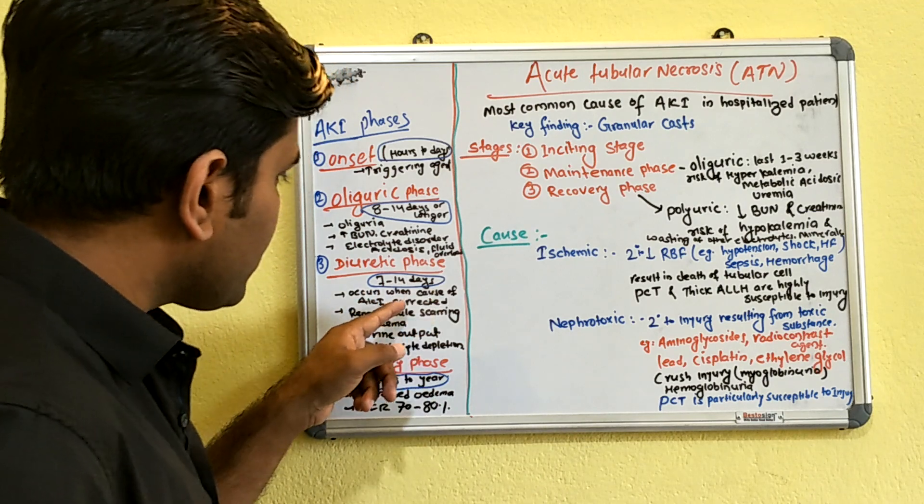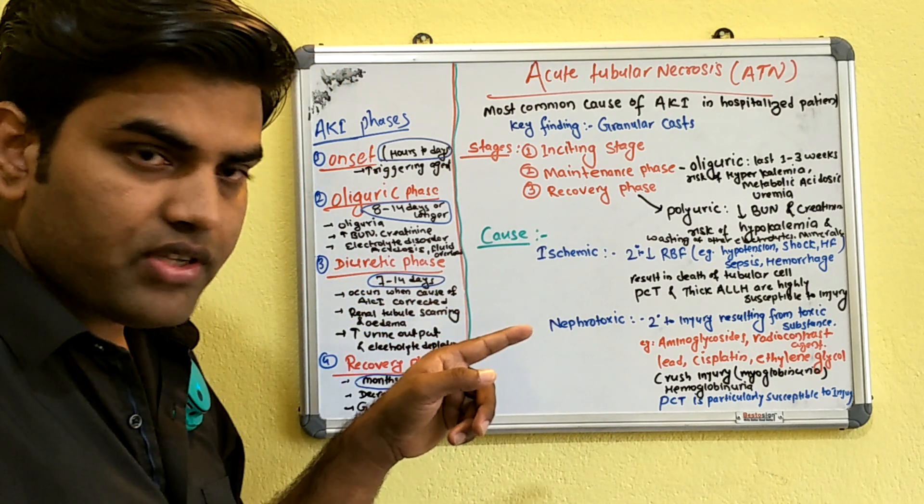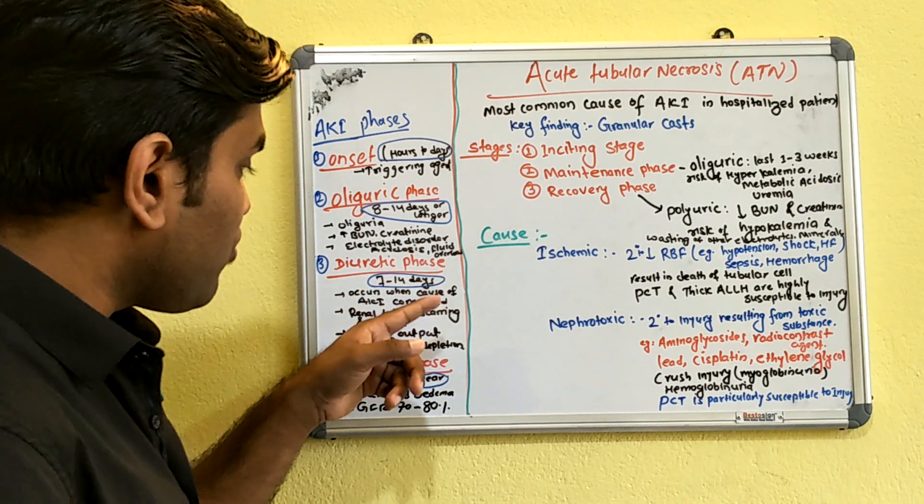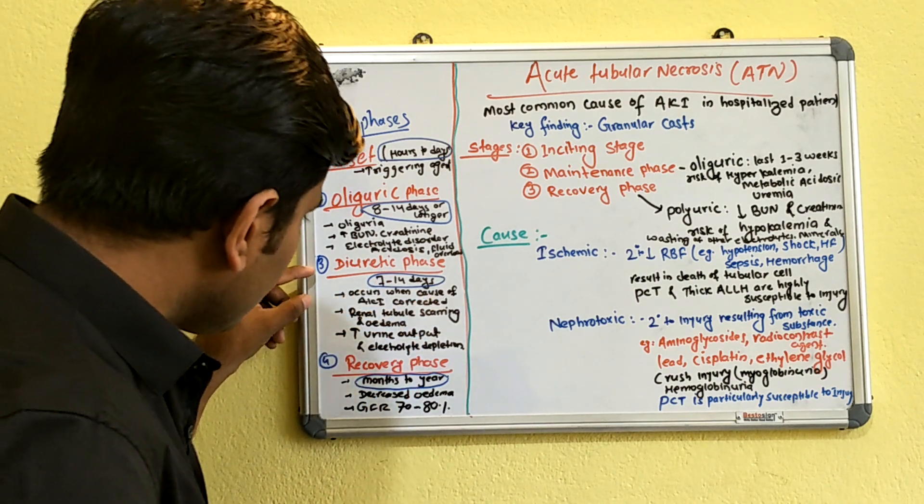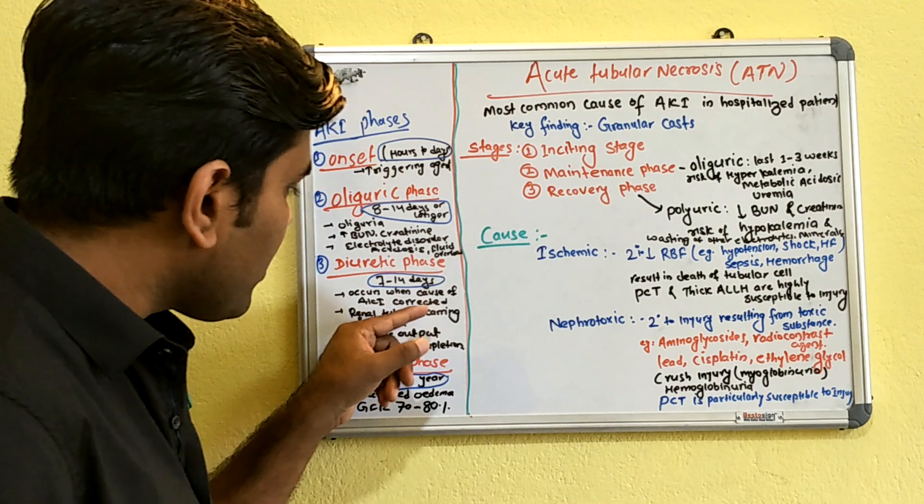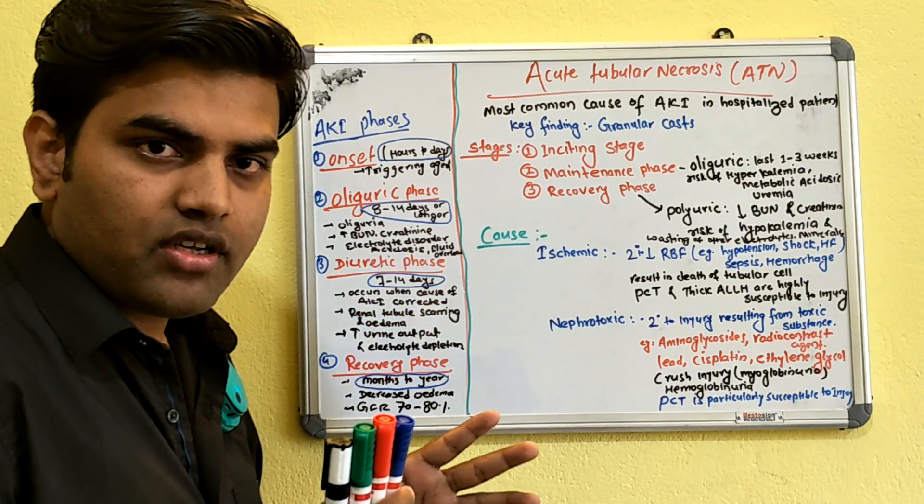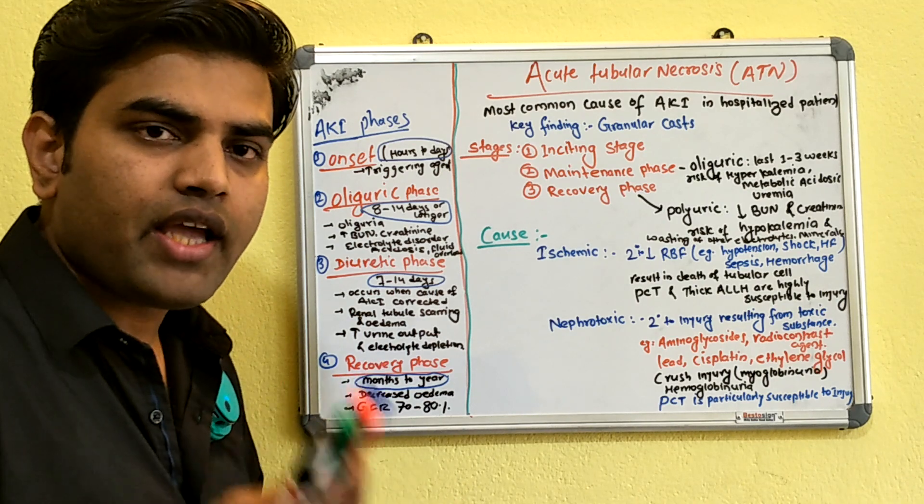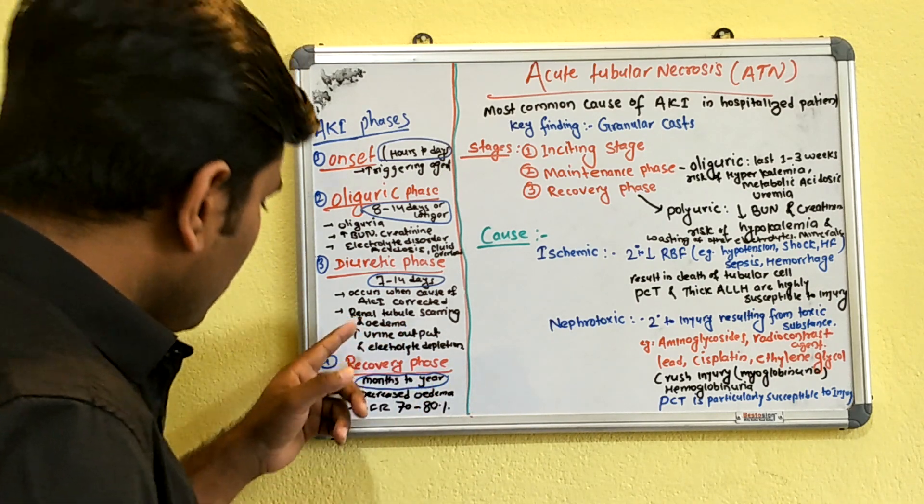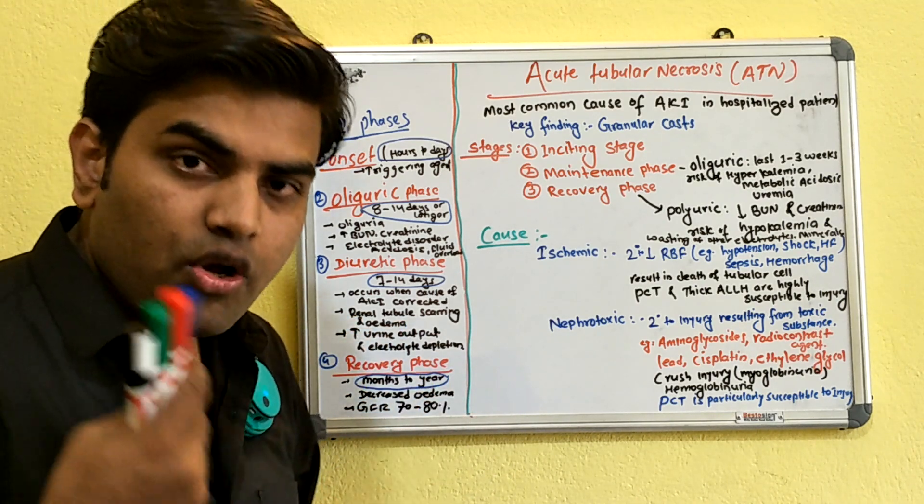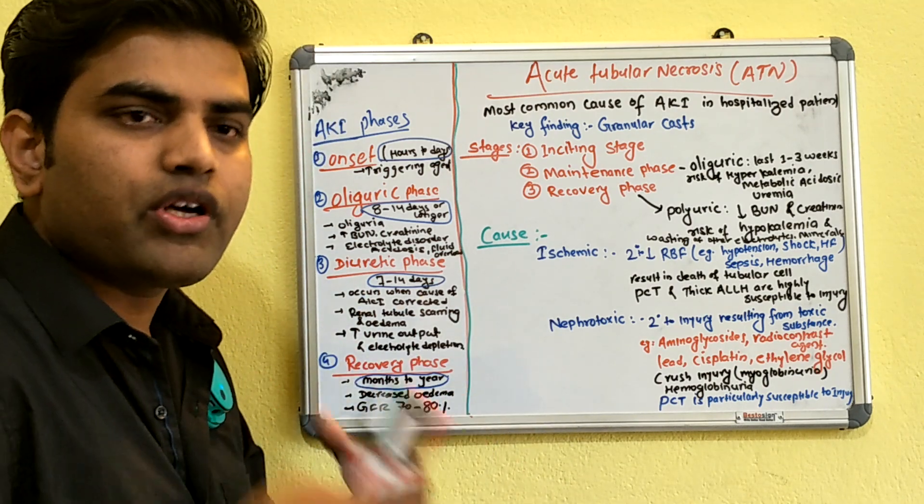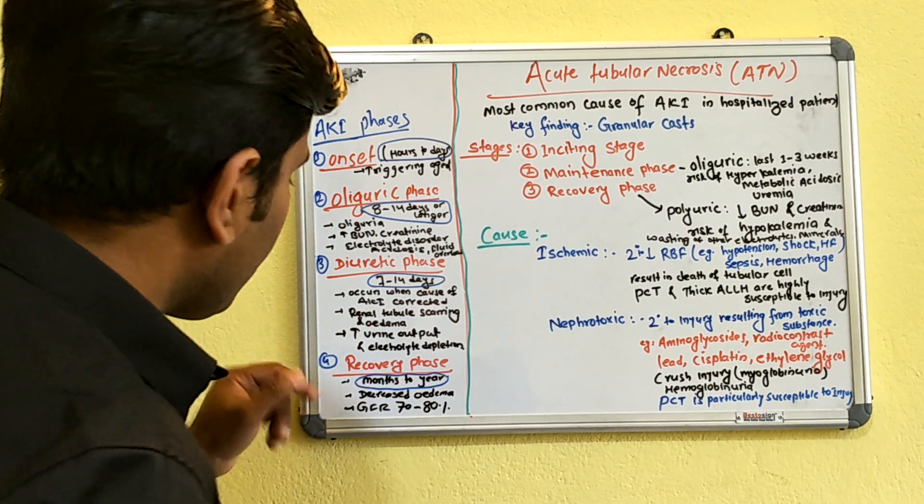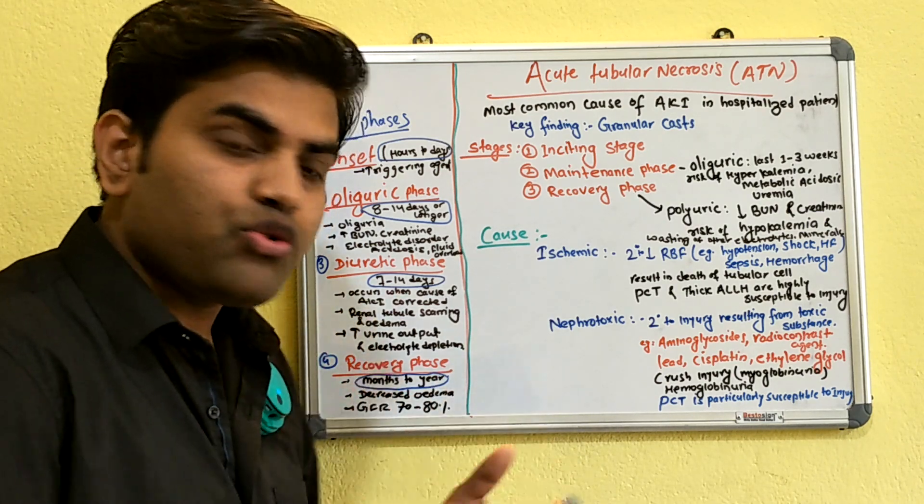After the cause has been corrected, it comes into the diuretic phase, which lasts from seven to 14 days. In this phase, the renal tubule is healing and there is edema, so there is increased urine output. But since there is increased urine output, there is depletion of electrolytes.